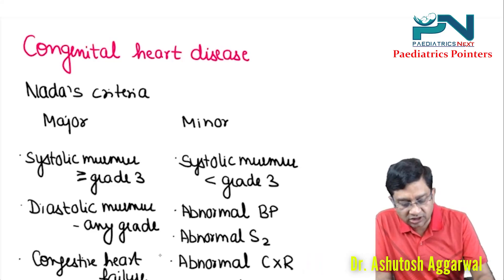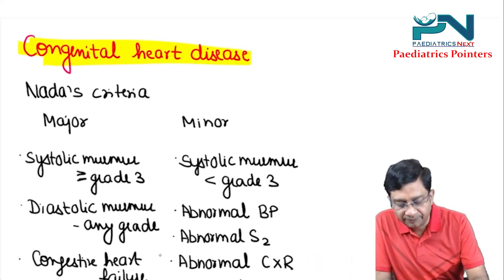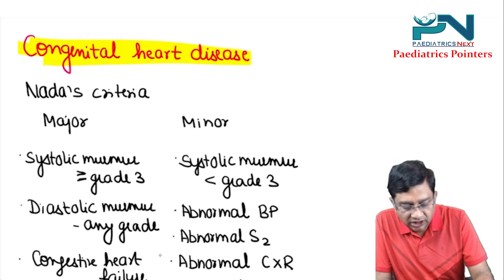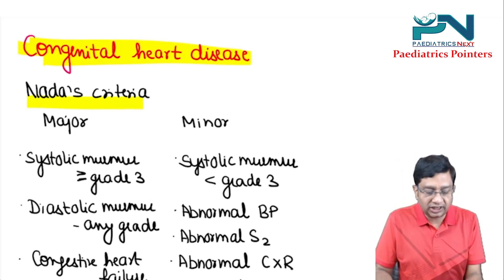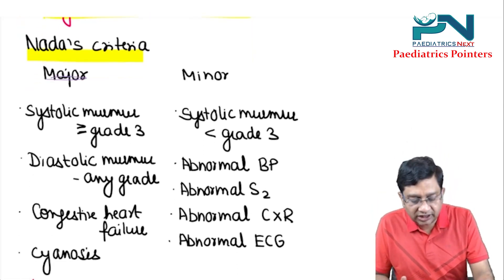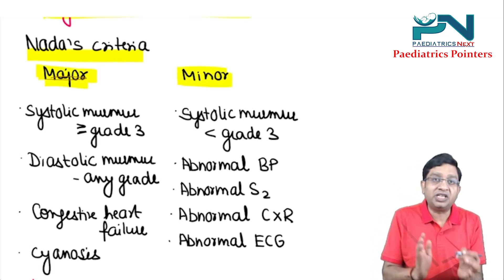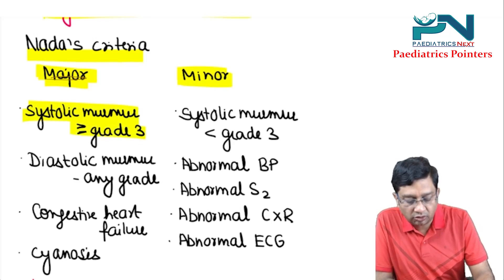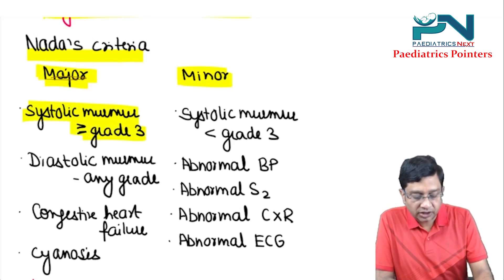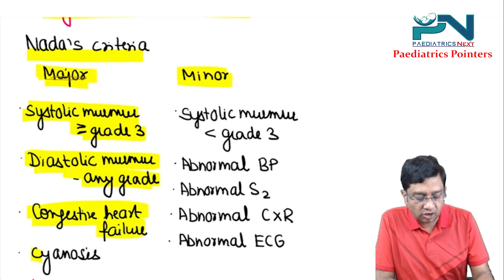To diagnose congenital heart disease, we take the help of NADA's criteria. This NADA's criteria can be major or minor. Major criteria includes 4 findings: systolic murmur more than or equal to grade 3, diastolic murmur of any grade, congestive heart failure, or cyanosis.